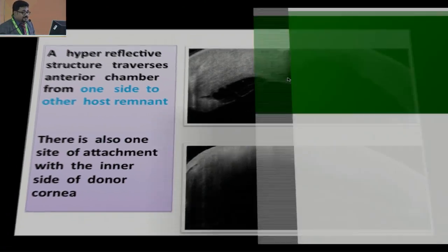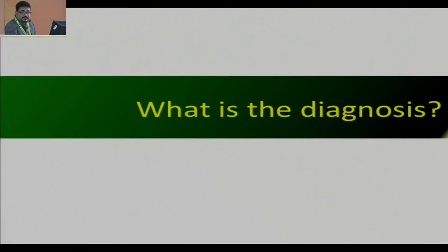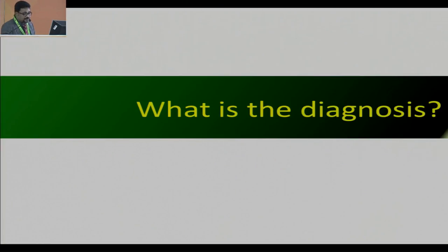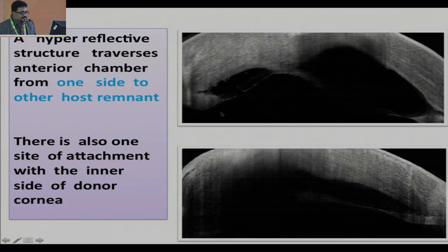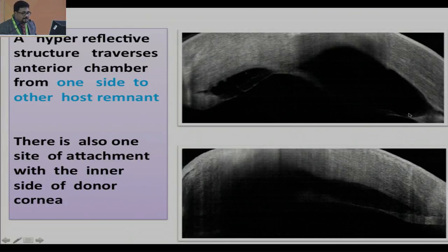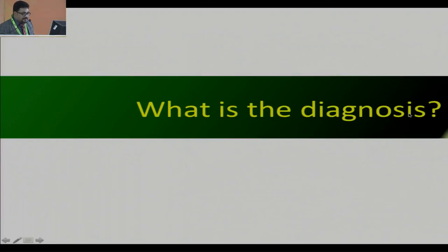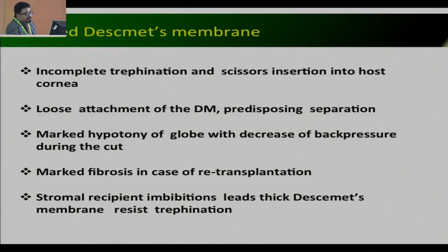What was the diagnosis in this case? The patient had an infiltrate in this area, and on ASOCT we can see this hyperreflective area. The diagnosis was retained Descemet's membrane, which can be due to incomplete removal or loose attachment of the Descemet's membrane. This patient again underwent repeat therapeutic keratoplasty, and we should remember that we have to remove the retained Descemet's membrane.